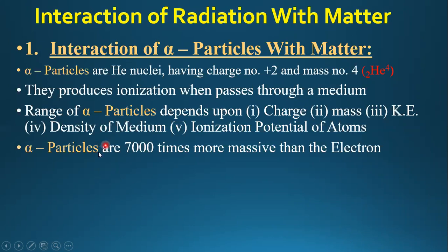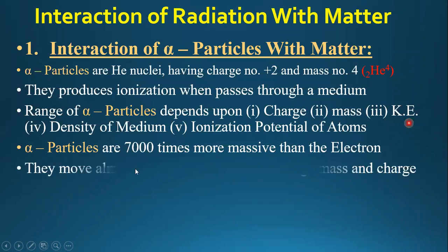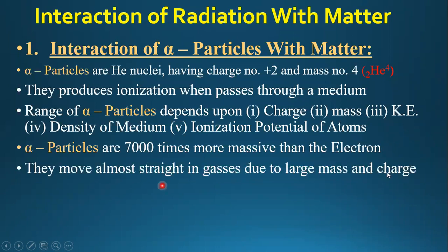Alpha particles are 7000 times more massive than electrons. Due to their large mass and charge, they move almost in a straight line when passing through gases.